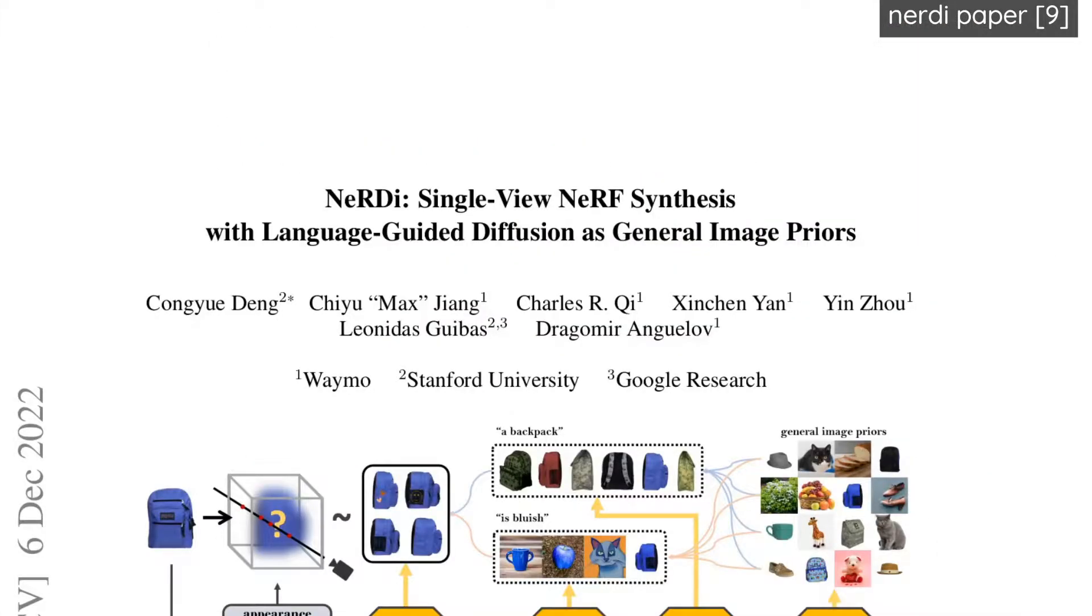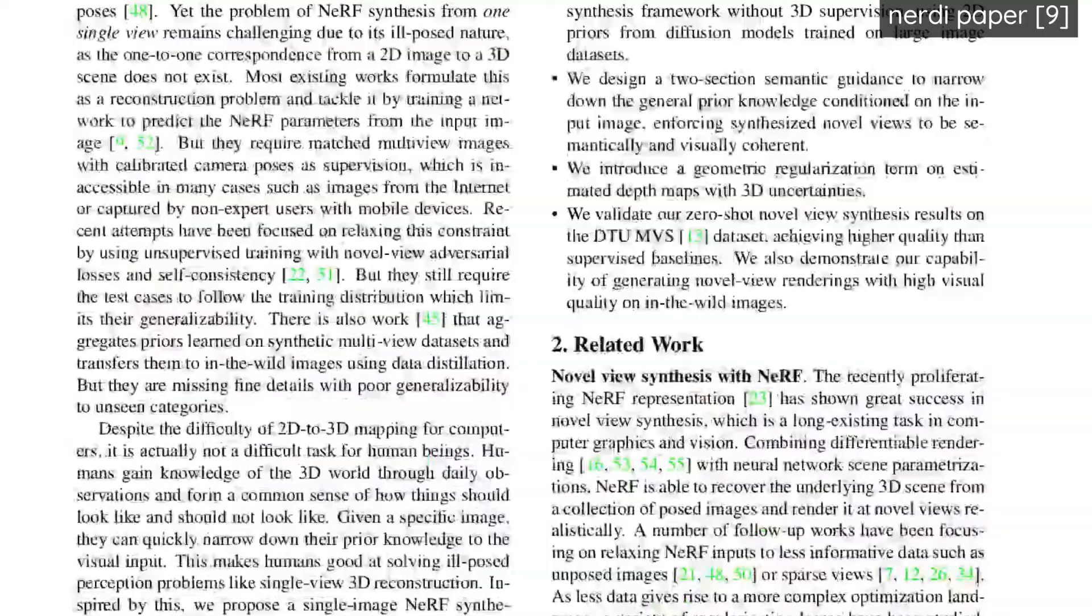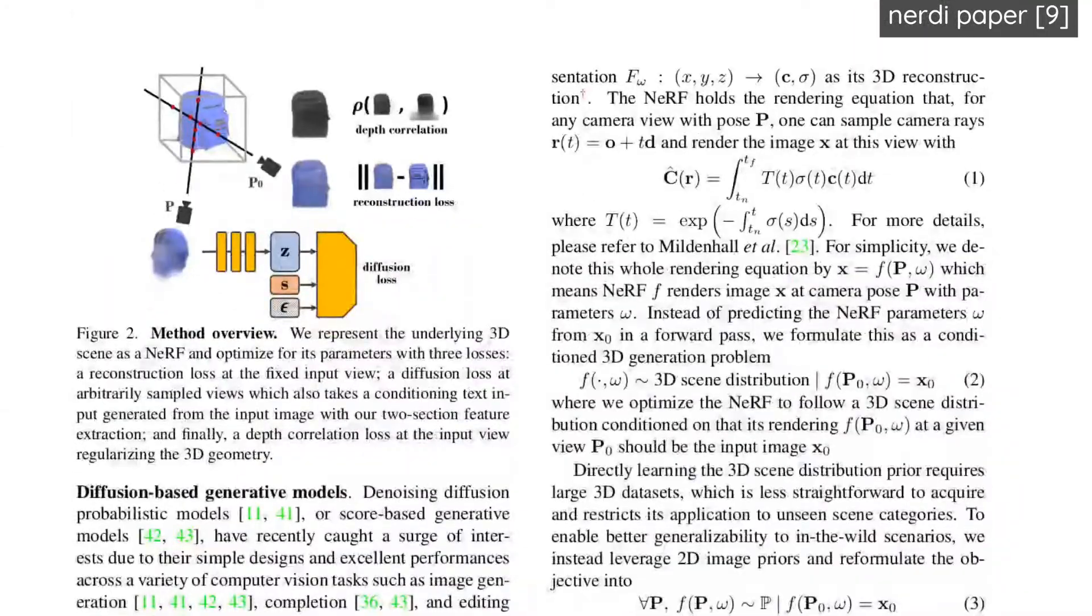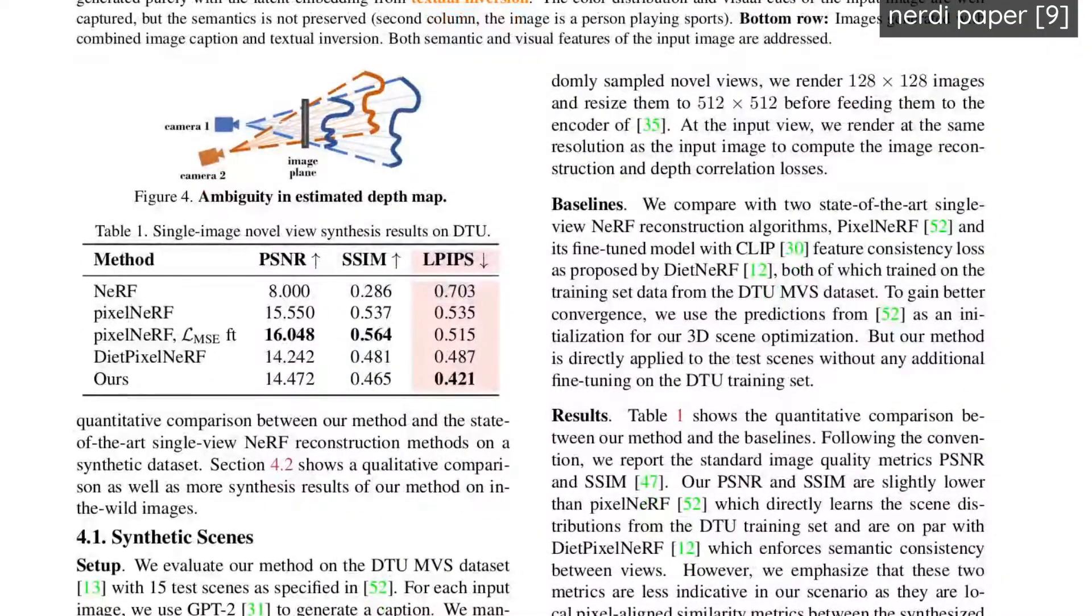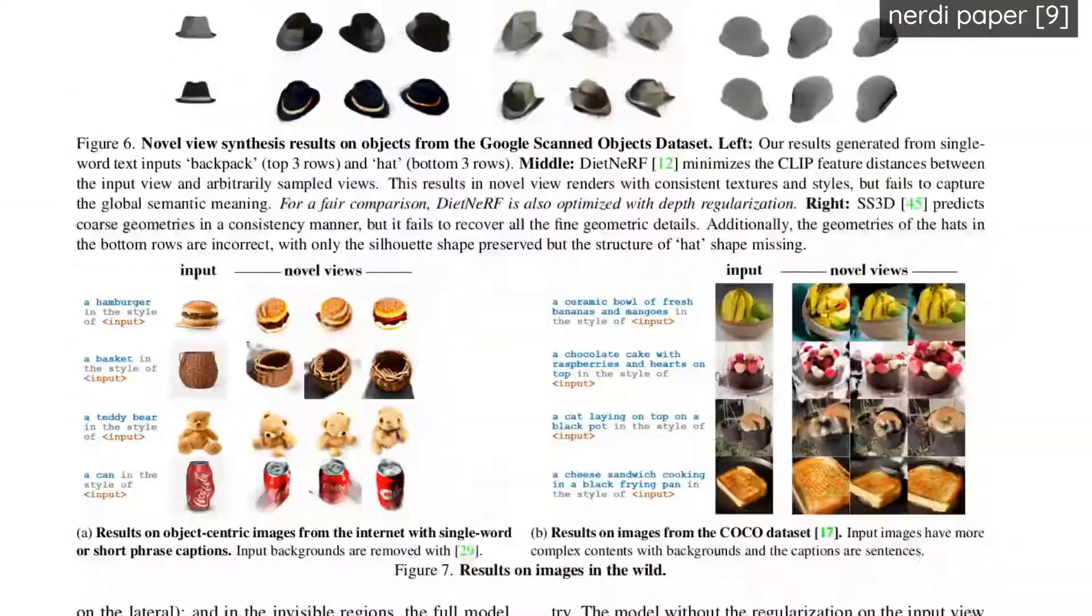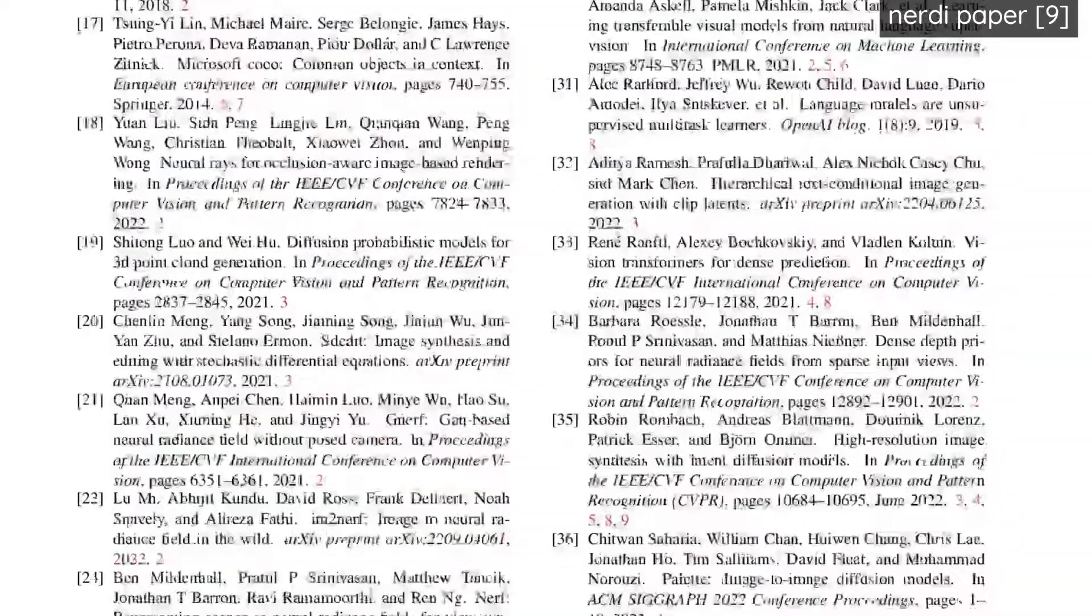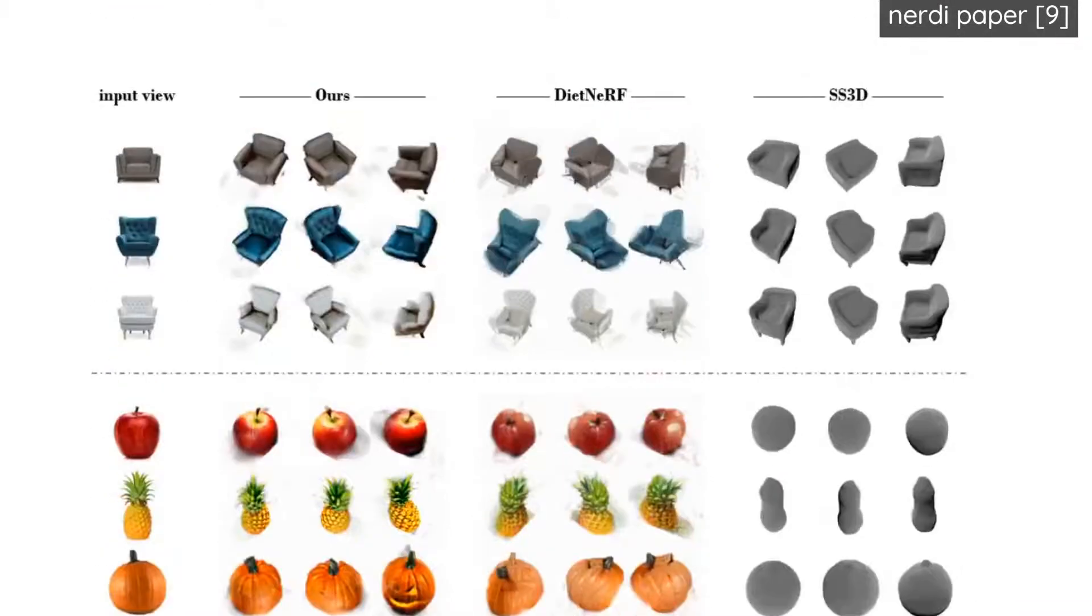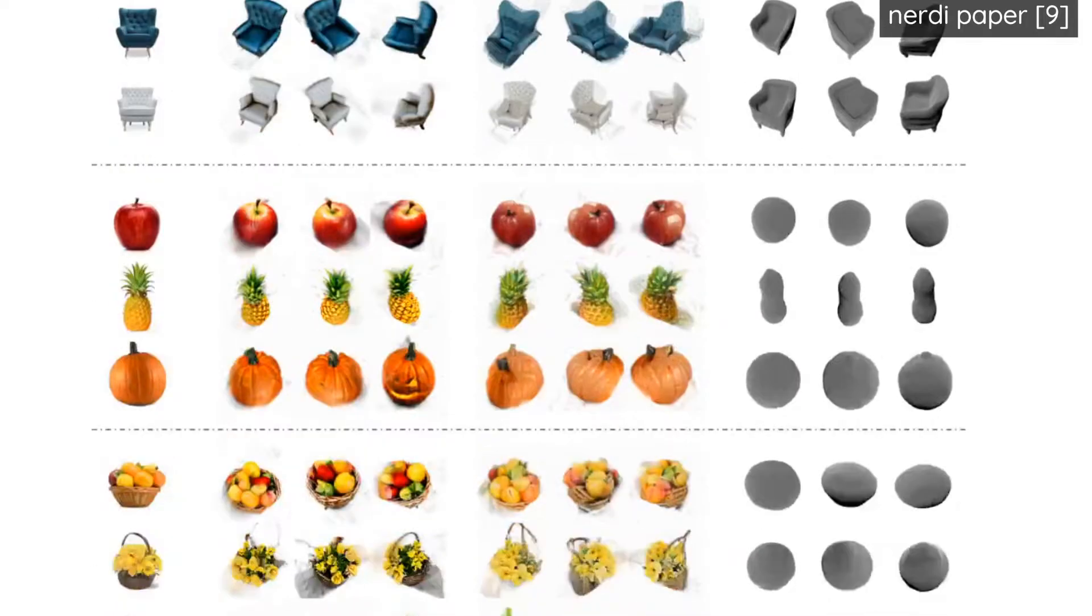This is the one that was released like a week ago. It's using language-guided diffusion in order to get single view NeRF synthesis. Basically, you're using the language-guided diffusion. So you're saying like, oh, this is a backpack, and then you have a picture of a backpack. And then it's creating a NeRF based on the backpack and a single image. There's just some ways that you can start combining these networks and these ideas into things that just seem so surreal and so futuristic. I thought that there was limitations on how much knowledge you could use as a prior in order to generate some of these things. I thought that there was more limitations than there appears to be.